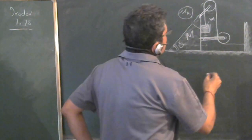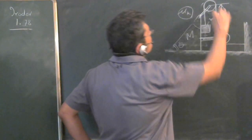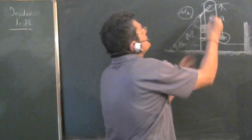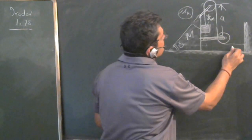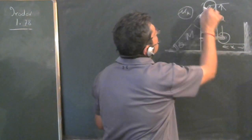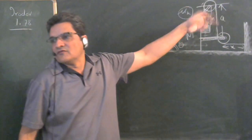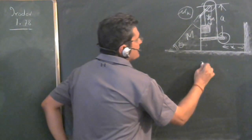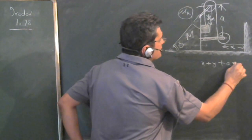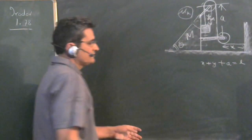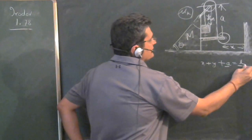First, analyze the constraints. The distance between the two pulleys, let it be 'a', is always fixed. Let the horizontal distance be X, the string segment on the other side be Y. So X plus Y plus a equals L, which is the total length of the string and is constant.